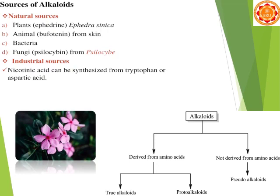Generally, alkaloids are classified as derived from amino acids or not derived from amino acids. Those alkaloids not derived from amino acids are called pseudoalkaloids. Those derived from amino acids are of two types: true alkaloids and protoalkaloids.